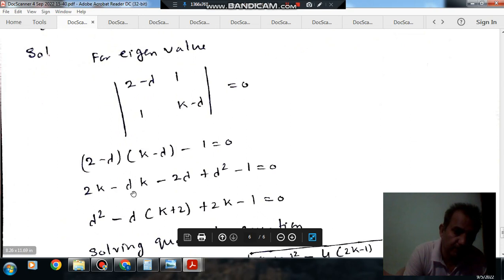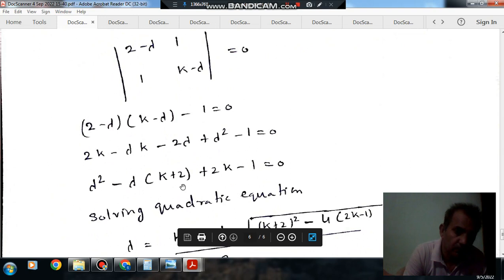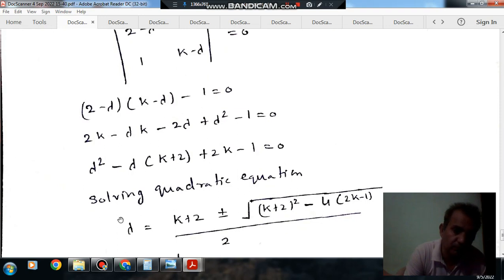From this, we have 2K - lambda*K - 2*lambda + lambda^2 - 1 = 0, or we have lambda^2 - lambda(K + 2) + 2K - 1 = 0.